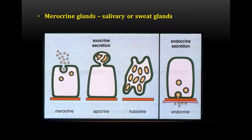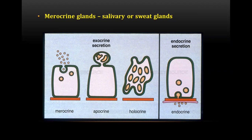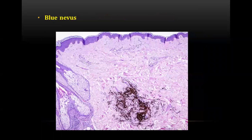Holocrine glands are glands in which the entire cell disintegrates to release secreted substances. An example is the sebaceous gland. Moving to the next question, which was about the histopathology of blue nevus.